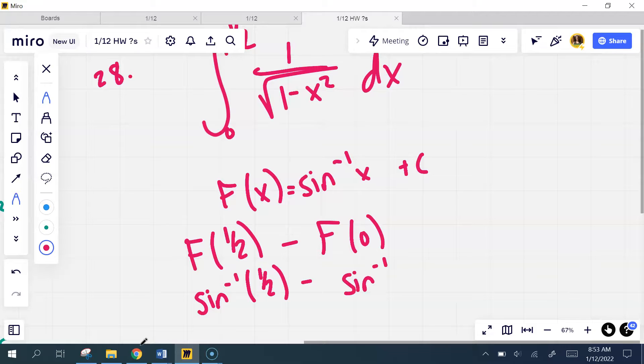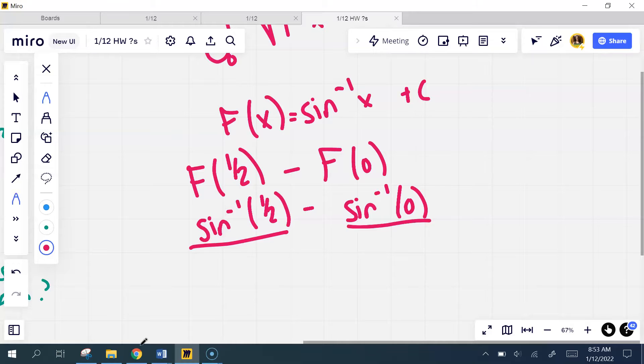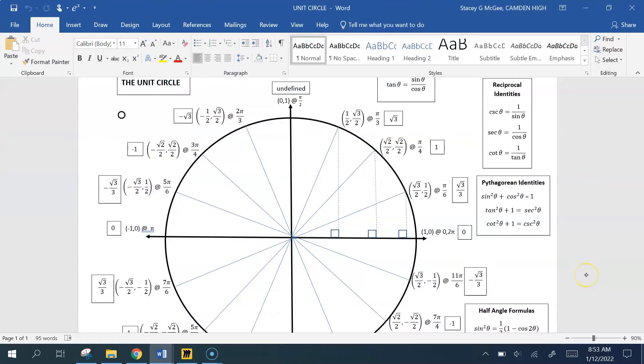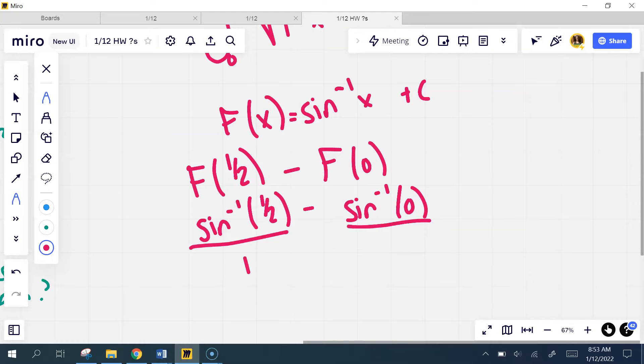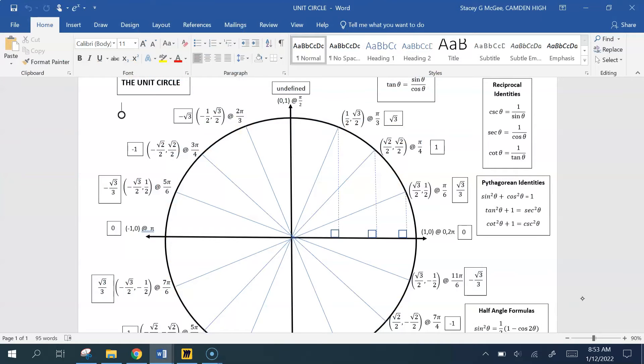minus the inverse sine of zero. Again this is where is the sine one half, where is the sine zero? So if you look back at your unit circle, where is the sine one half? The sine is one half at pi over six. Where is the sine zero? Sine being y remember, is at zero.